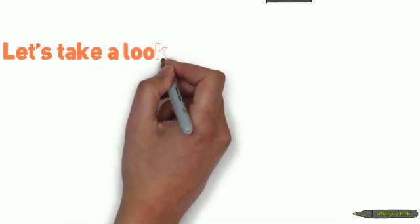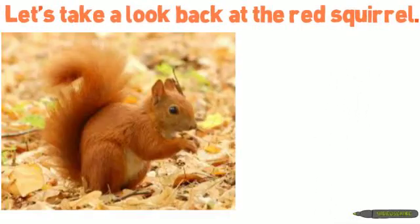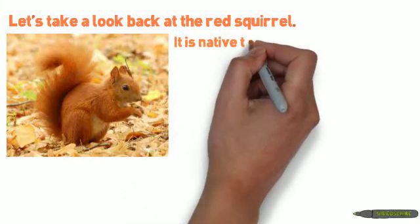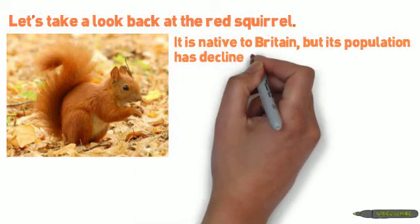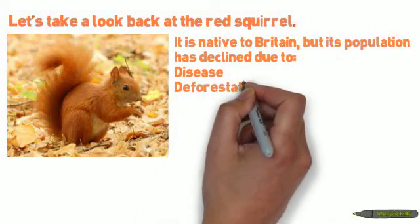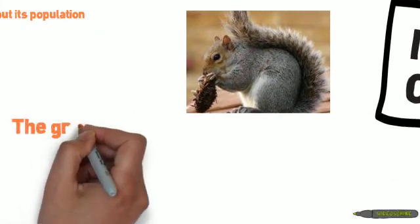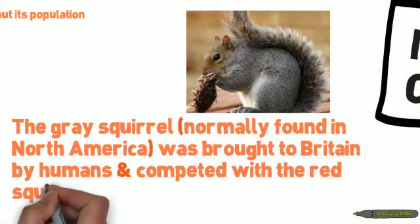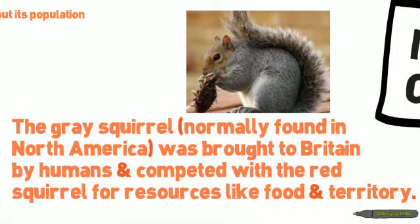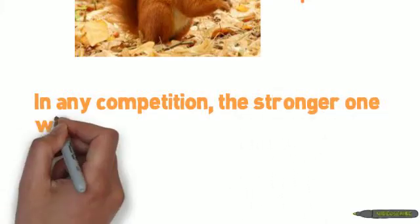Let's take a look back at the red squirrel to see an example of interspecific competition. In Britain, the red squirrel's population has been declining due to diseases carried by other organisms, deforestation — which is the cutting of trees in order to use them to make products or clear space — and competition. This is the gray squirrel, which should look familiar since it lives in North America. It was brought to Britain by humans and started to take over, competing with the red squirrel for resources like food and territory. Even though both organisms are squirrels, they are different species, so they are displaying interspecific competition. And in any competition, the stronger one will win.